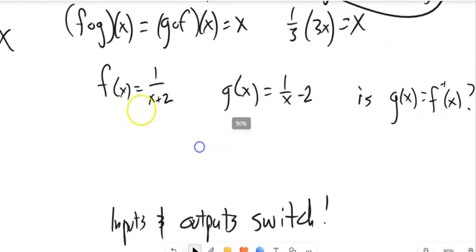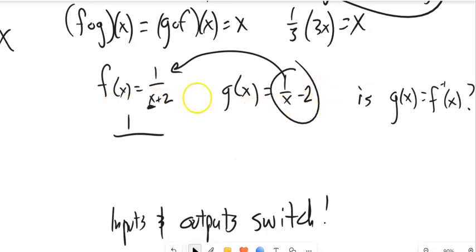Here's another one. Are these inverses? Does 1 over x plus 2 undo 1 over x minus 2? Well, let's plug this one into that one and see what happens. I have 1 over, there's my input spot. So 1 over x minus 2 plus 2. Let's see,